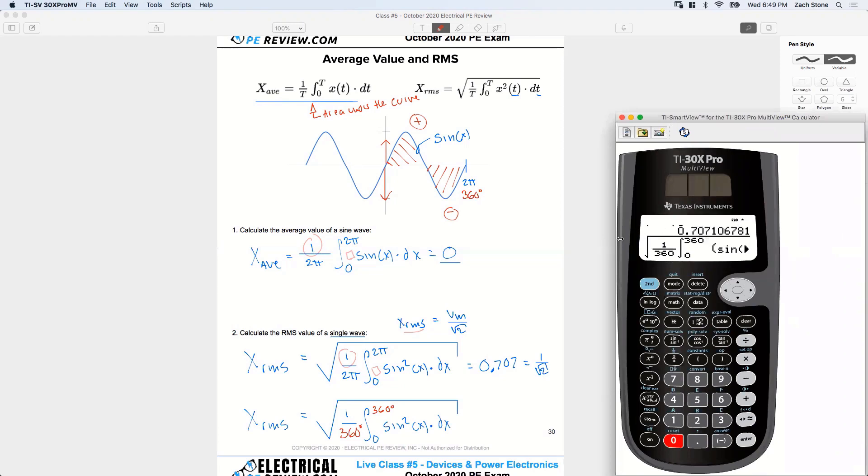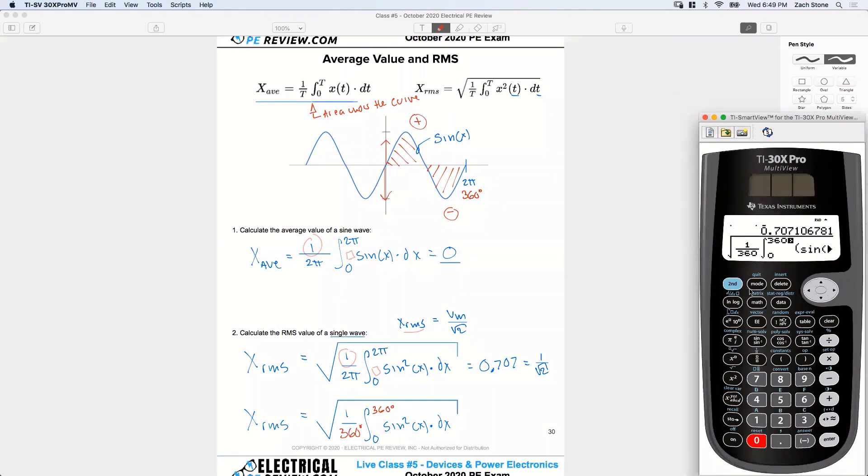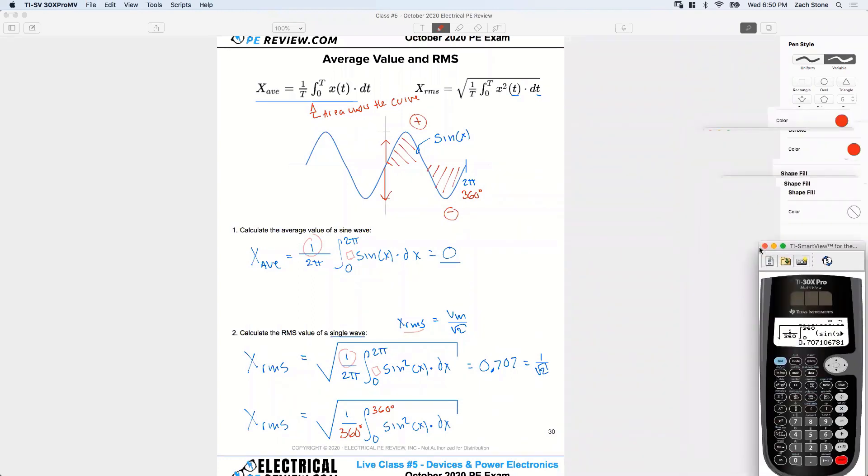It stands for radians. So I've got to go to mode and change from radians back to degrees. So now we went from rad to degrees. I can go back to that function and press enter. And I've got, look at that, 0.707 just like before. Pretty neat, huh?